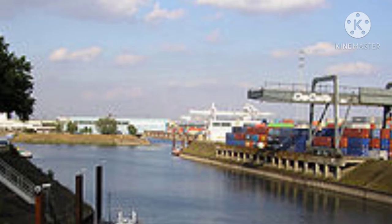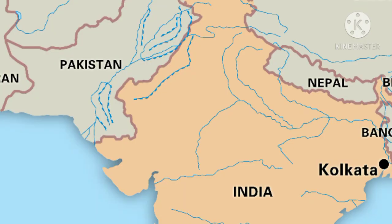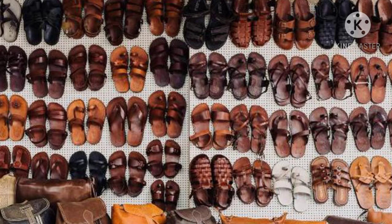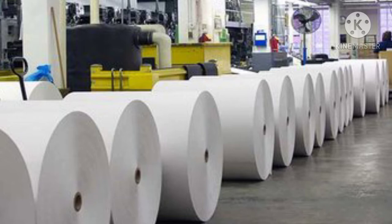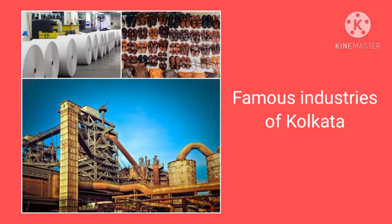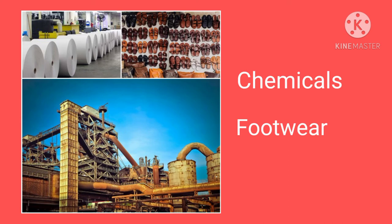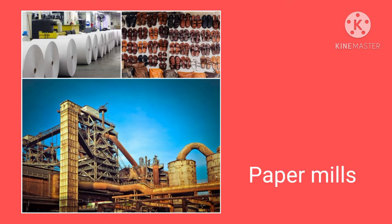Now we are going to talk about the economic utility service and transport service in Kolkata. Kolkata is a major inland port and the most important city in eastern India. Kolkata is the main business, commercial, and financial hub. The famous industries of Kolkata include chemical, foodware, paper mills, etc. These are the important industries located in Kolkata.